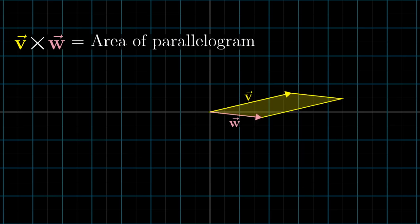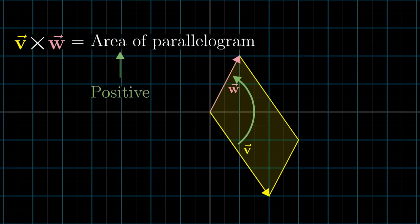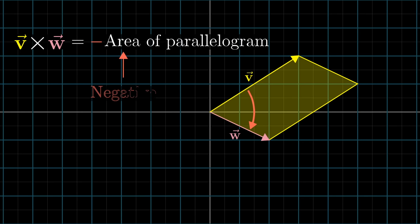Basically, if v is on the right of w, then v cross w is positive and equal to the area of the parallelogram. But if v is on the left of w, then the cross product is negative, namely the negative area of that parallelogram.